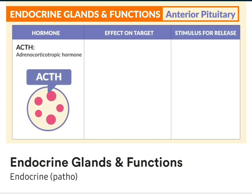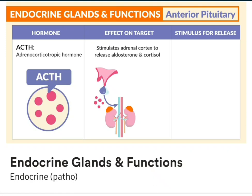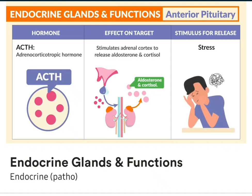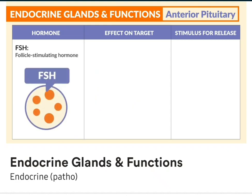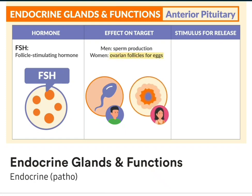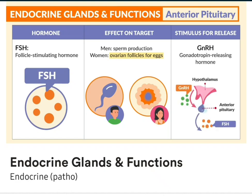Starting with ACTH, the adrenocorticotropic hormone — the effect on the target is that it stimulates the adrenal cortex to release aldosterone and cortisol, and the stimulus for release is stress. The next one is FSH, the follicle-stimulating hormone. In men, sperm production is the effect on the target, and for women, ovarian follicles for the release of eggs. And the stimulus for release is GNRH, the gonadotropic-releasing hormone.